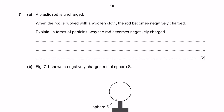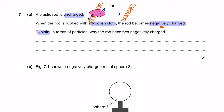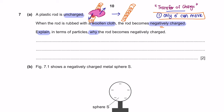Question 7, Part E: A plastic rod is uncharged, meaning it has equal numbers of positive and negative ions. When the rod is rubbed with a woollen cloth, the rod becomes negatively charged. When discussing transfer of charge, remember: only electrons can move — positive ions do not move. For the rod to become negatively charged, it must have gained electrons. The negative electrons from the cloth have transferred into the rod, which is why the rod is now negatively charged.